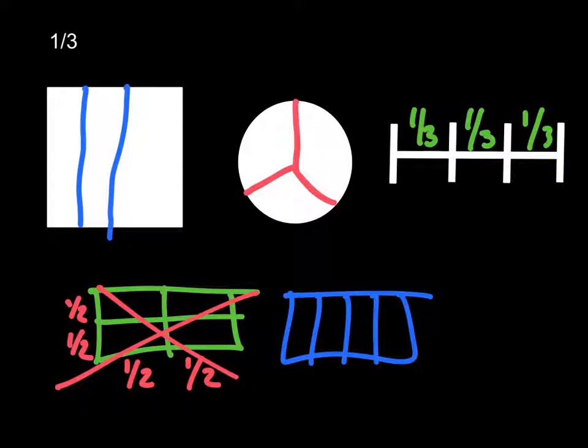That'll make more sense as we go through different strategies, or not necessarily strategies, but more complex problems, where you might have something like one-fourth of one-half, and then you're able to label your x and y-axis differently. But we'll get more into that as we go forward in other lessons.